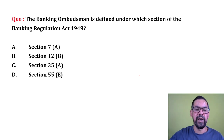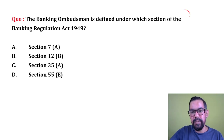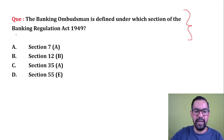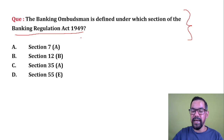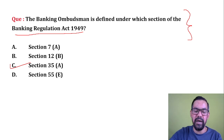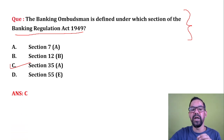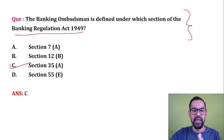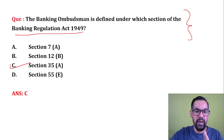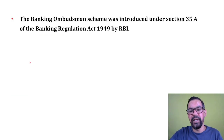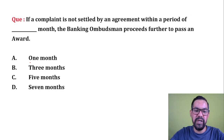Next question: The Ombudsman Scheme is defined under which section of Banking Regulation Act 1949? The Banking Ombudsman Scheme comes under Banking Regulation Act 1949 and is defined under Section 35A. Section 35A also covers KYC and other related matters. So the Banking Ombudsman Scheme is defined under Banking Regulation Act 1949 under Section 35A.